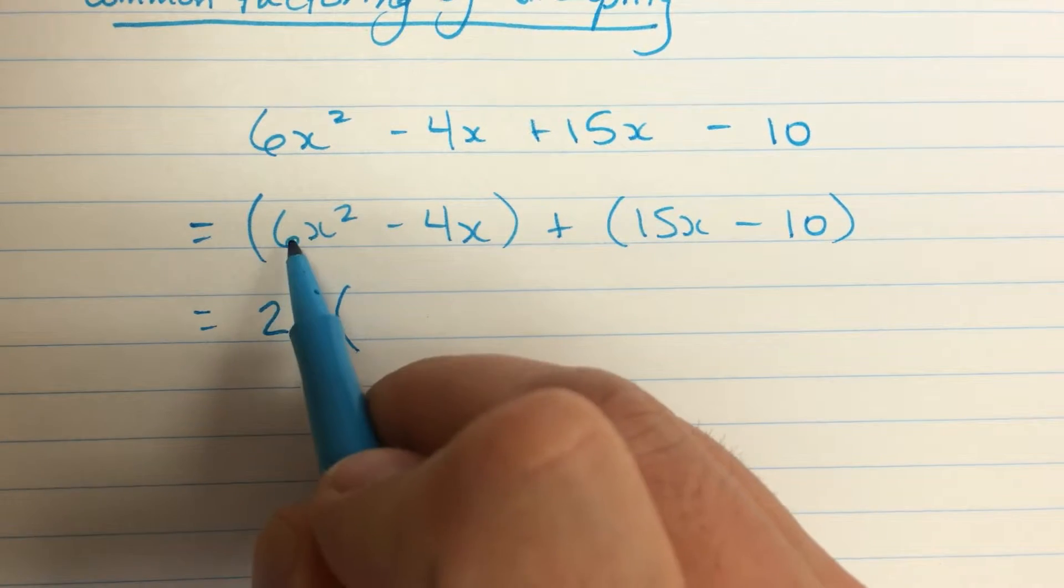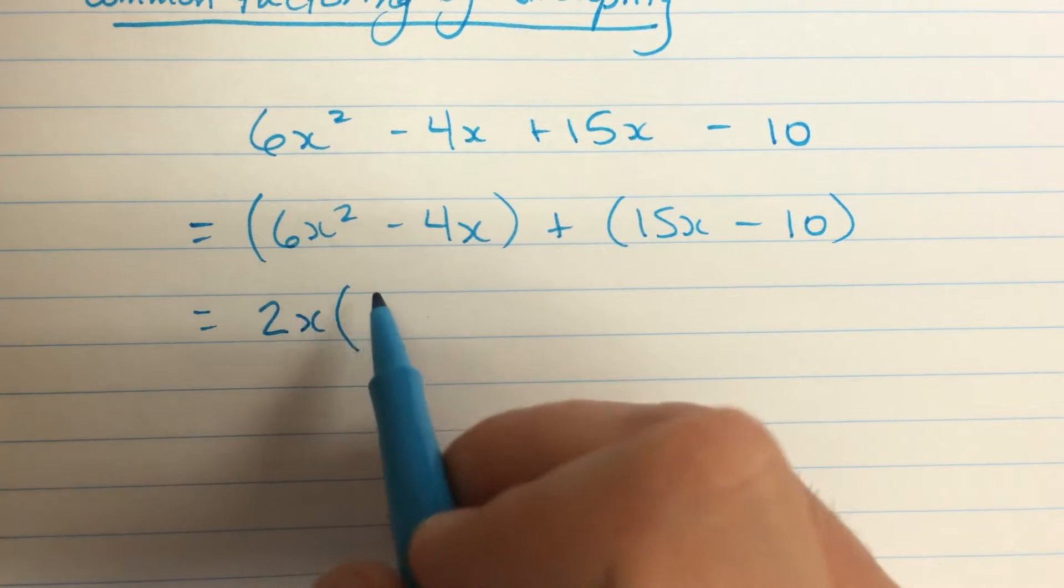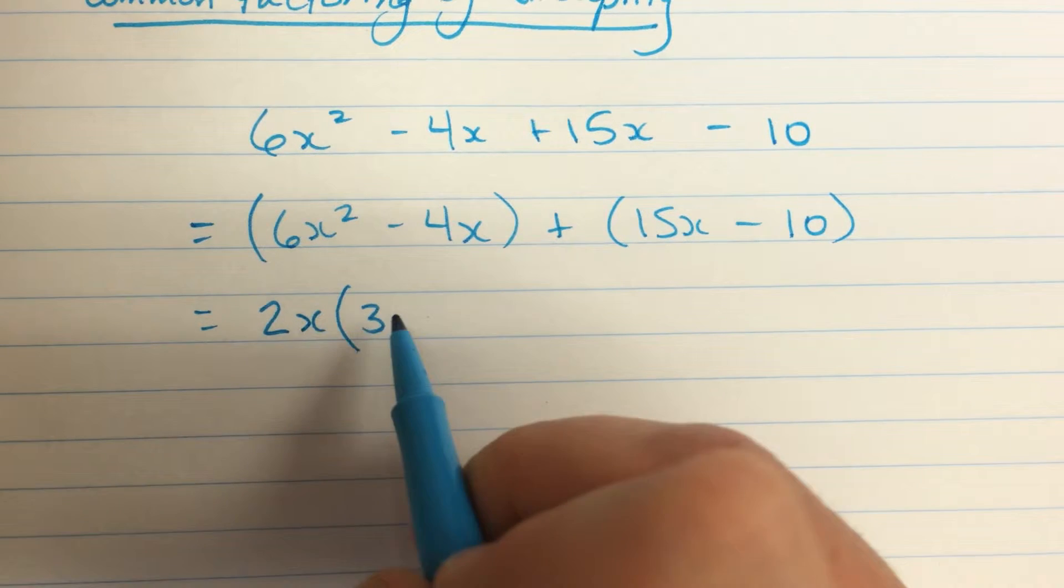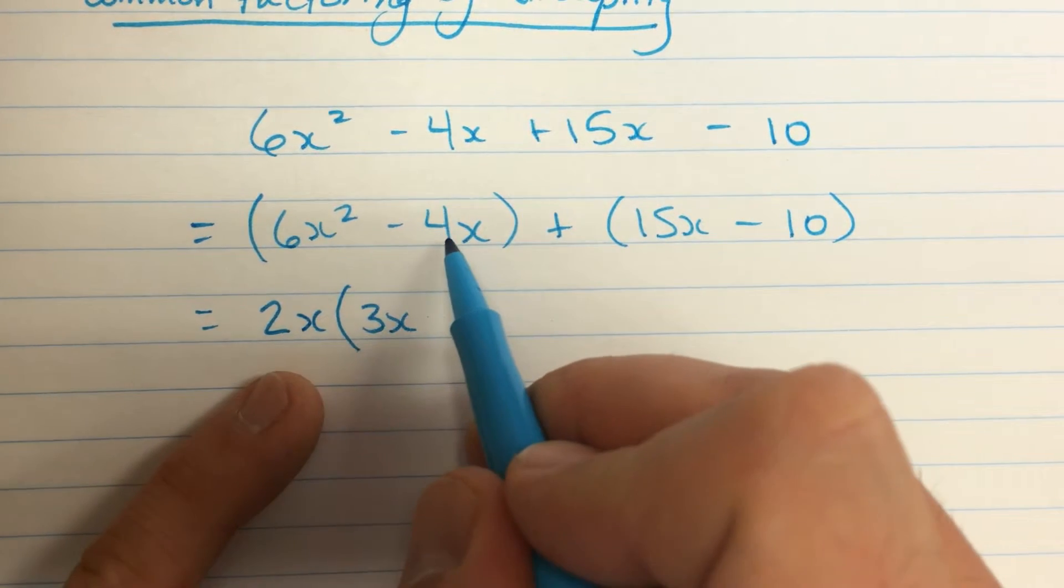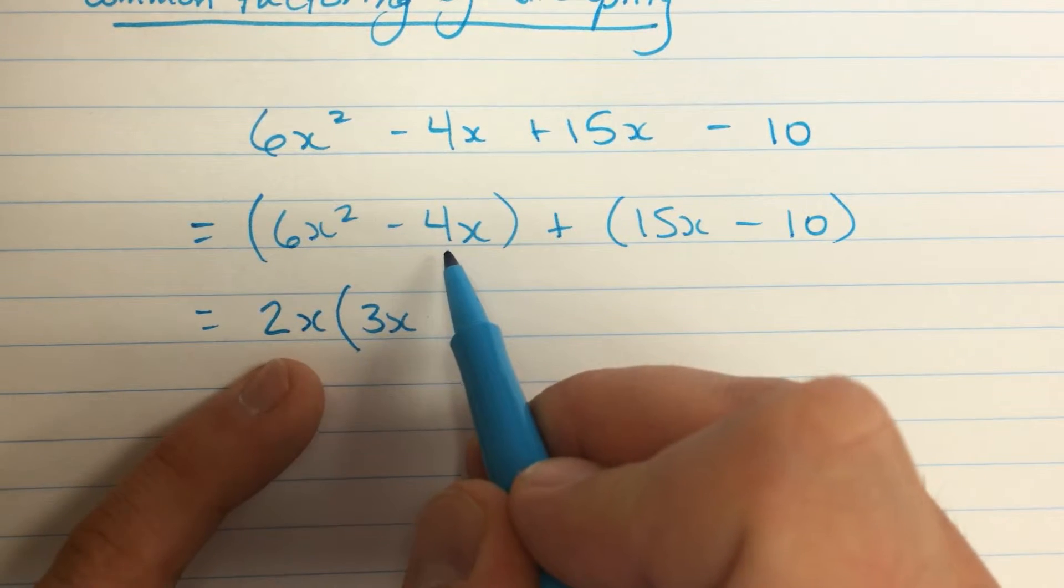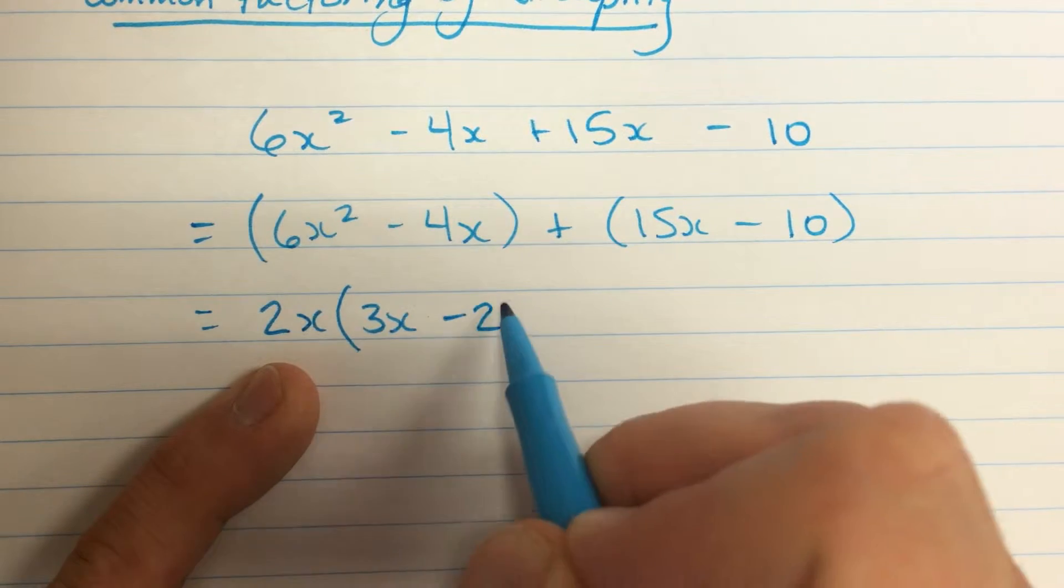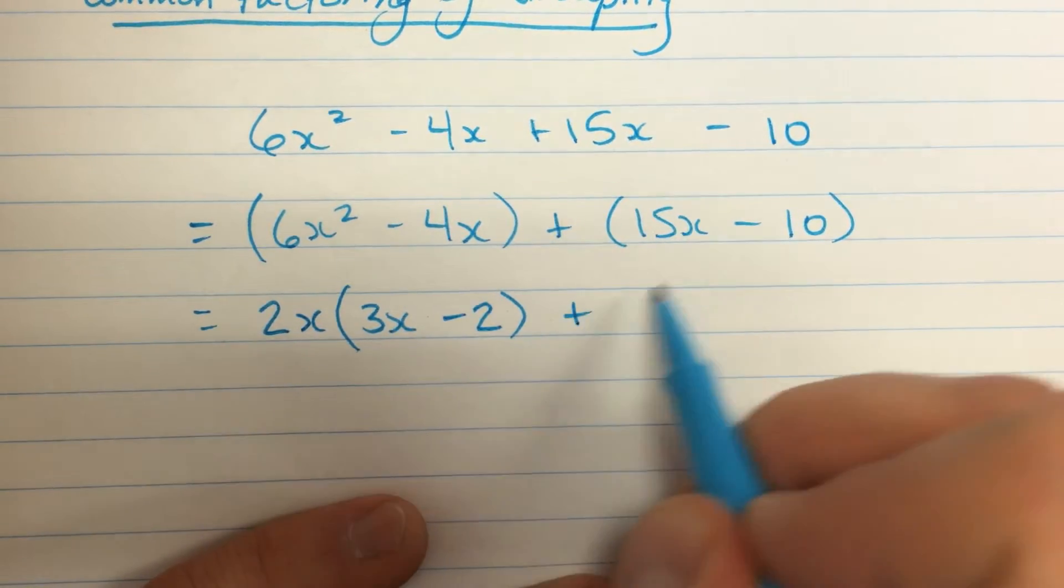And now, I'm going to notice that if I'm just looking at this little binomial, I can factor this. I can factor it by taking out 2x. What am I left with? Well, 6 divided by 2 is 3. x squared divided by x is x. I have a 3x there. And this one here, dividing out 2x, will leave me with a minus 2.